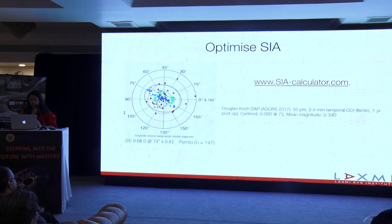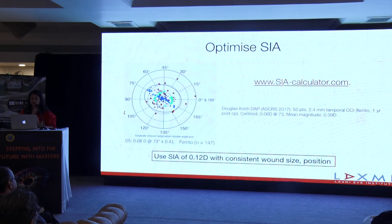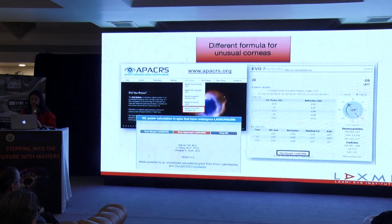Knowing that SIA can be quite variable, it is a good idea to find your own SIA if you are operating with incisions larger than 2.8 mm. If you can't do that or if you are going less than 2.8 mm, you can just put an SIA of 0.12 and do your calculations.